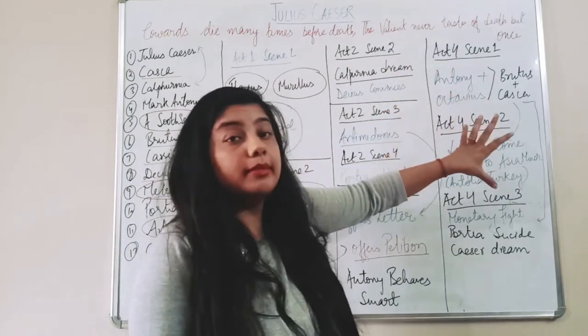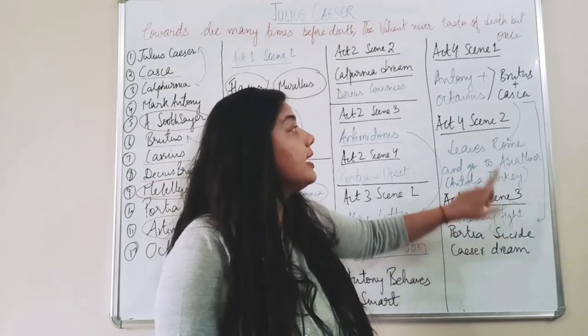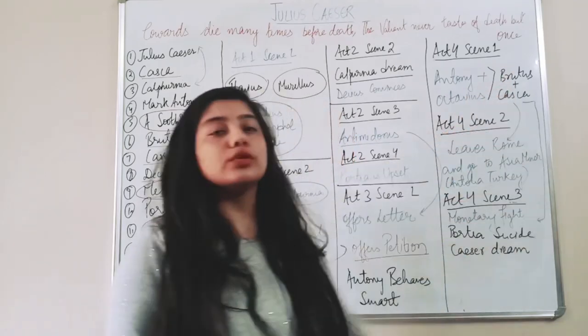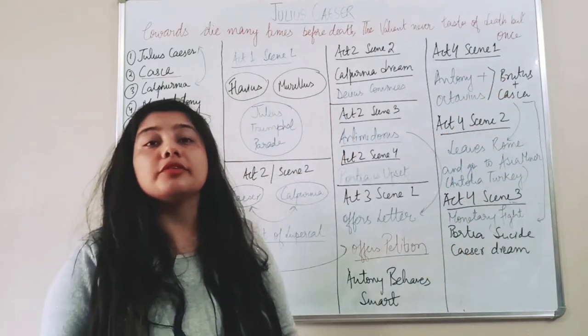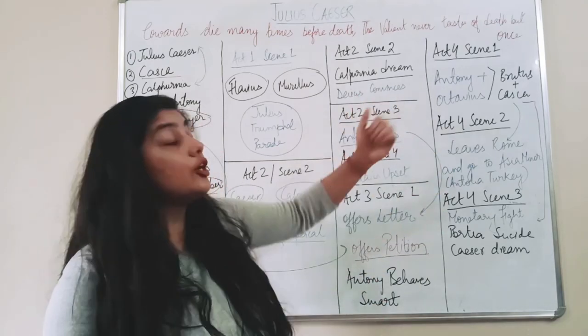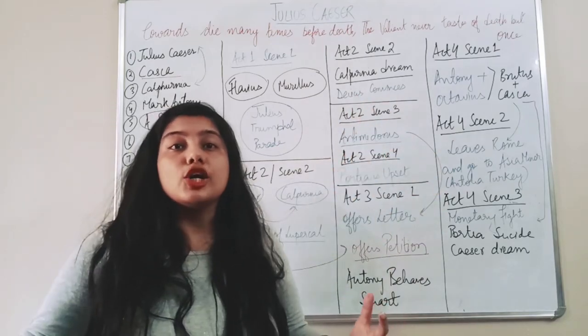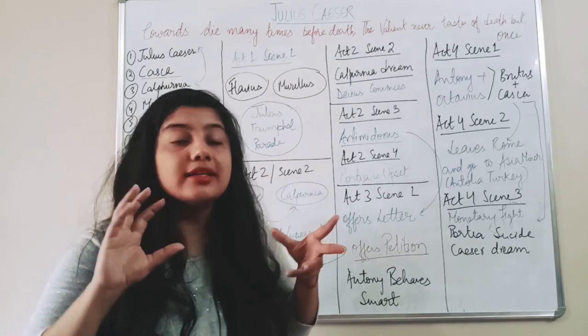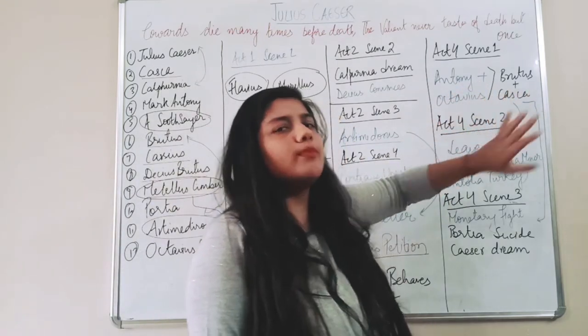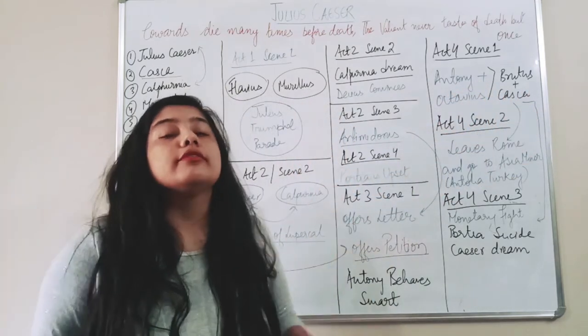So now finally what happens, they have decided. In the middle, Brutus and Cassius, they have a voluntary fight. Actually Cassius comes to Brutus and he tells that 'I need money for the army because we need to fight against Antony and Octavius, they have got a big army.' So there is slight conflict between Brutus and Cassius also but that gets resolved. Now the final day comes.